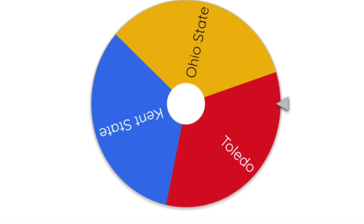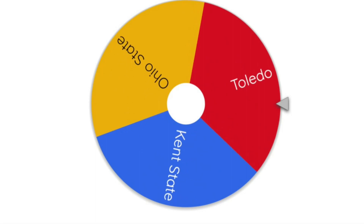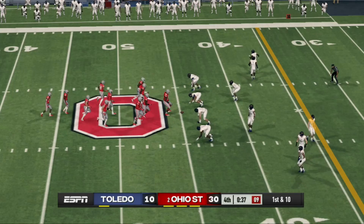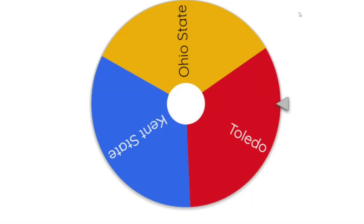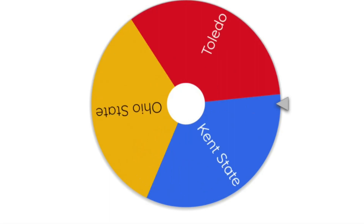Kent State defended themselves for the first time. Toledo then goes into Ohio State and Ohio State defeats them. Toledo is not looking so hot — it doesn't look like they're meant to win this challenge.